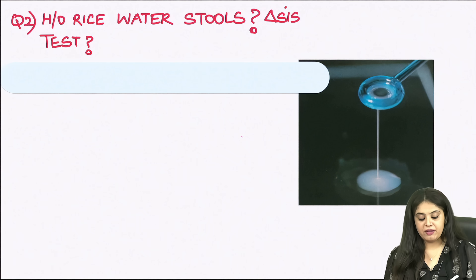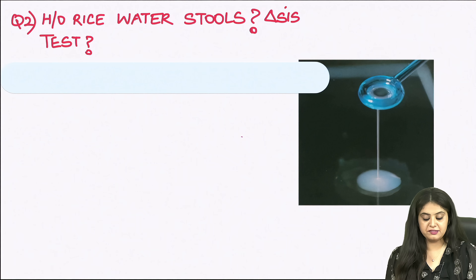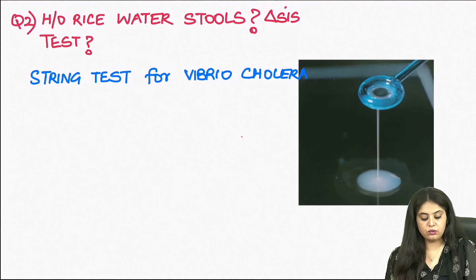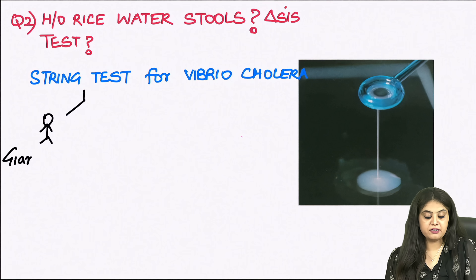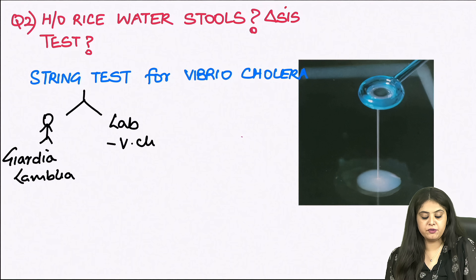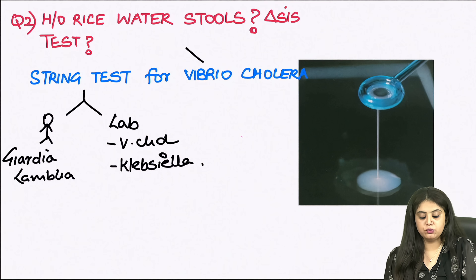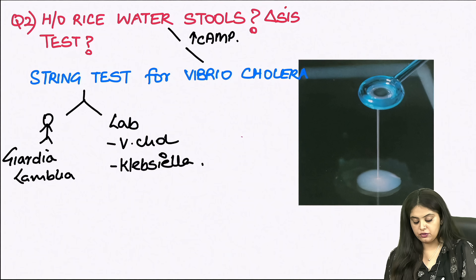Moving on to the second image: we have characteristic rice water stools, indicating Vibrio cholerae. The test being performed here is the string test. The string test, if done within the human being, is done for the parasite Giardia lamblia. However, if it is done in the microbiology lab, it is done for Vibrio cholerae and also for Klebsiella. Another question regarding Vibrio cholerae is its mechanism of action, which is by increase in cyclic AMP.